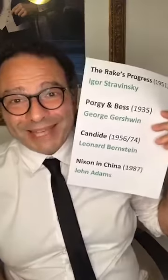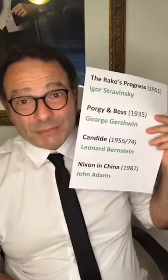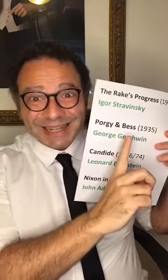Then there's Porgy and Bess — an opera by George Gershwin about a Black couple. Porgy is Black, Bess is Black, Bess is addicted to cocaine, and Porgy loves Bess and will follow her wherever she is. 'Summertime, and the living is easy.' That's from Porgy and Bess. Amazing opera.